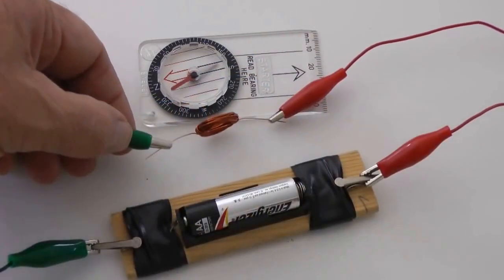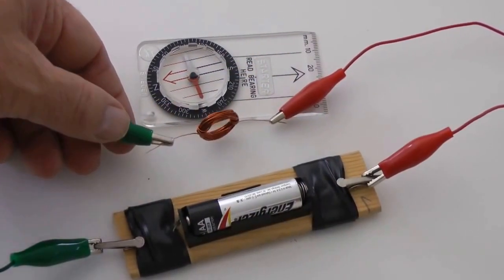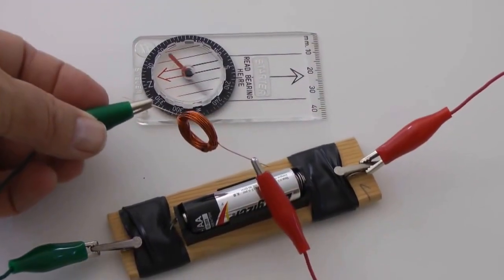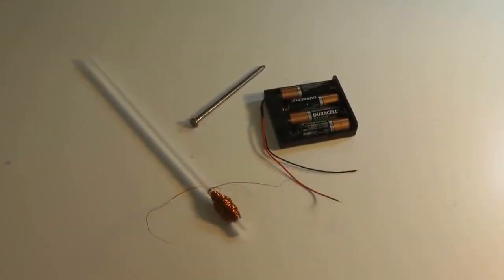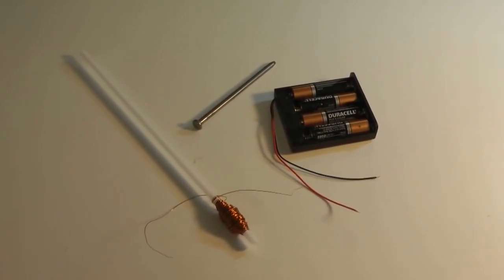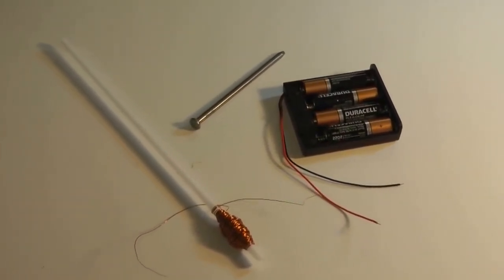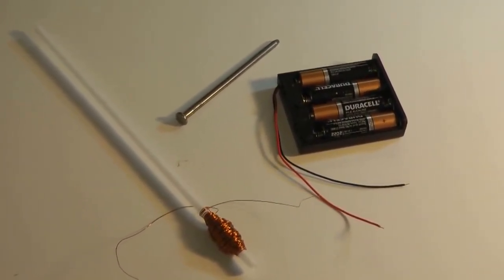Well-designed coils can produce powerful magnetic fields. I'm going to build a simple solenoid using 12 meters of fine insulated magnet wire, a 4-inch common nail, a straw, and four AA batteries.